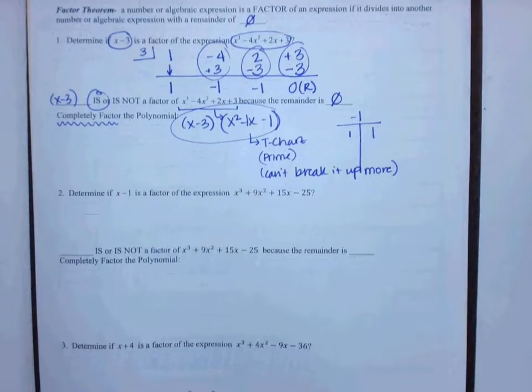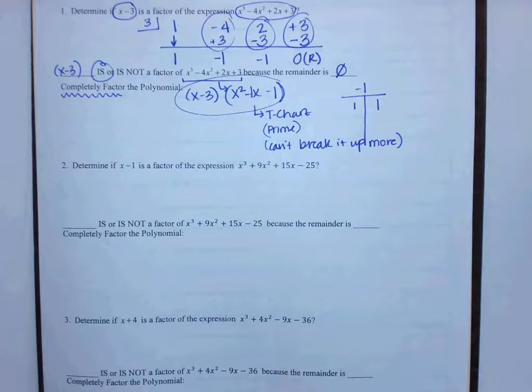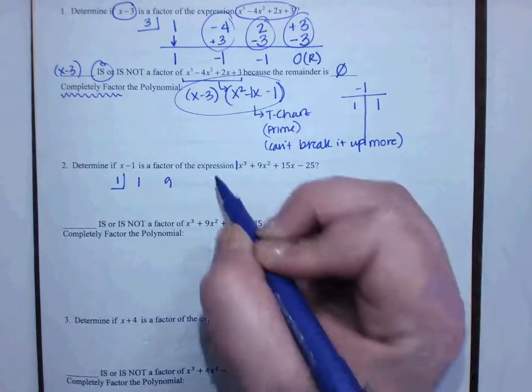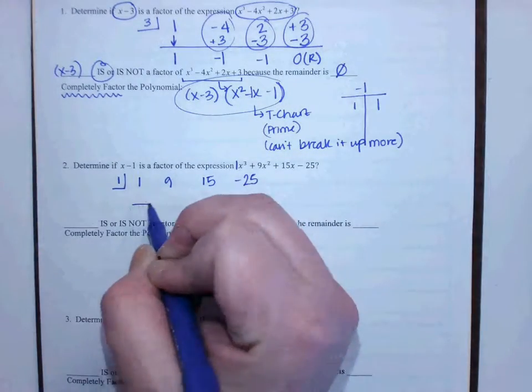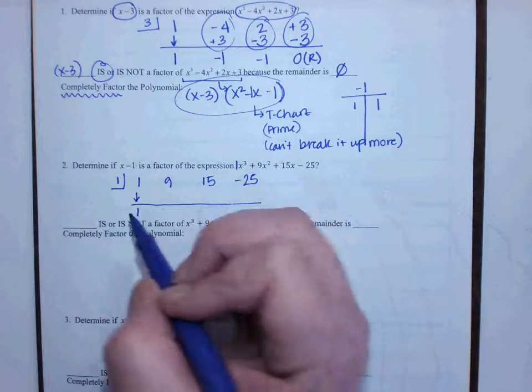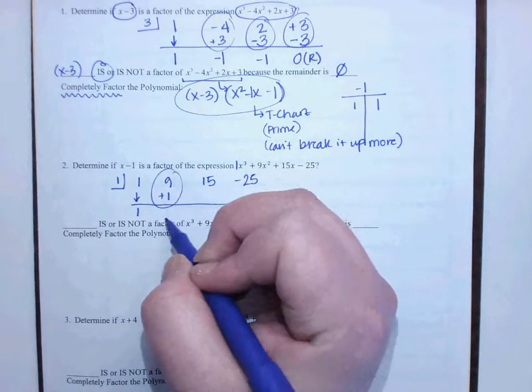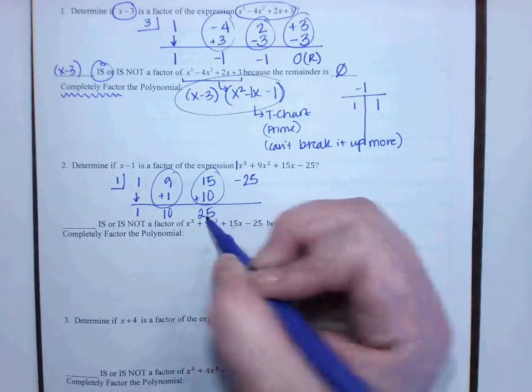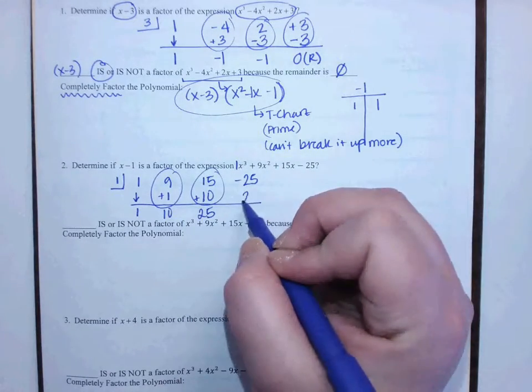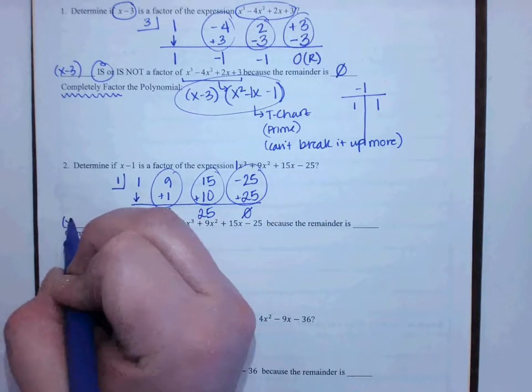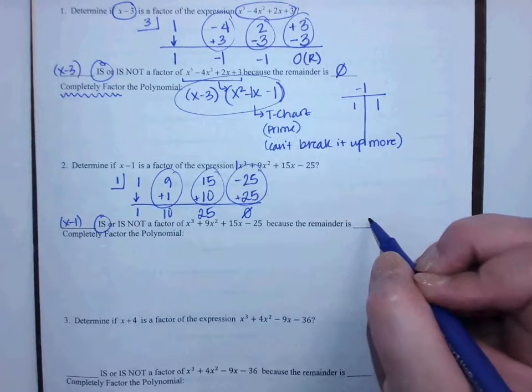Look at number 2. Determine if x minus 1 is a factor of the expression. What do I do first? Put a 1 in the box. Positive 1. Then I list out all my factors. So I have a 1x³, a 9x², a 15x, and a negative 25. Now, if it's going to be a factor, what should my remainder be? 0. So I carry down my first column as a 1. What's 1 times 1? 1. And then 9 plus 1 gives me 10. Then I do 10 times 1 is 10. Then I add it with the 15. I get 25. 25 times 1, we get 25. Combine that last column. My remainder is 0. So I would put x minus 1 is a factor because the remainder was 0.